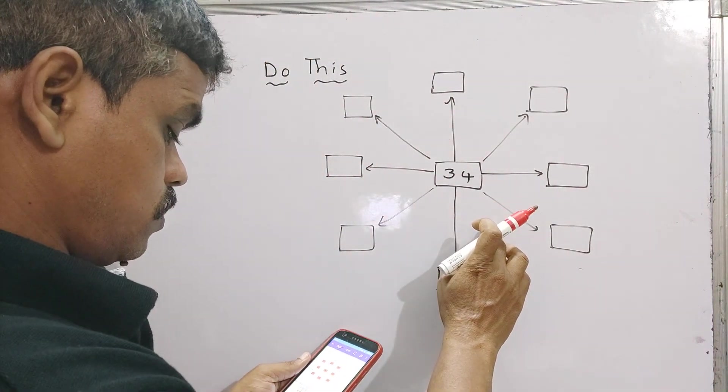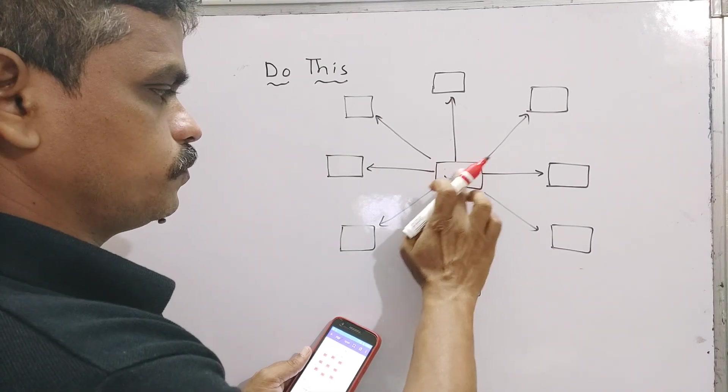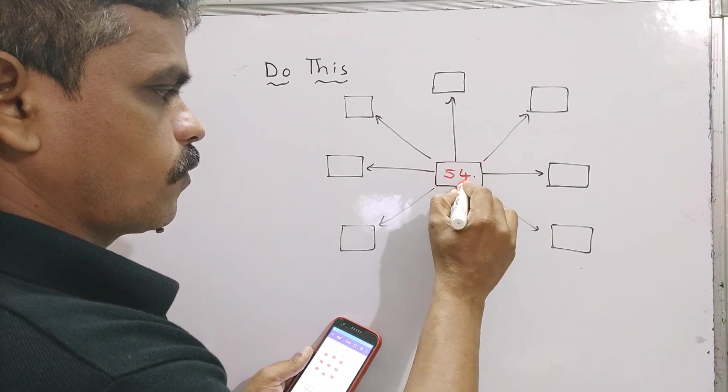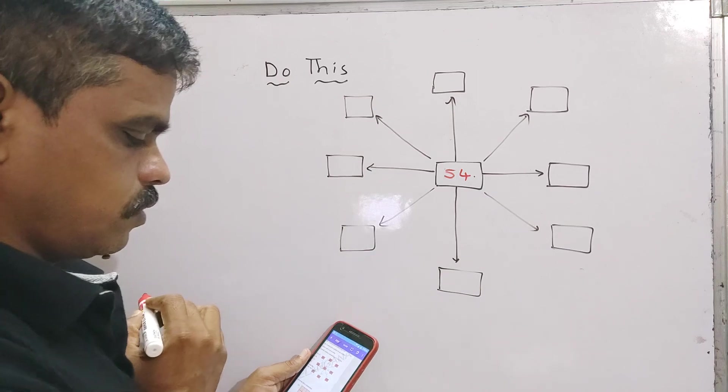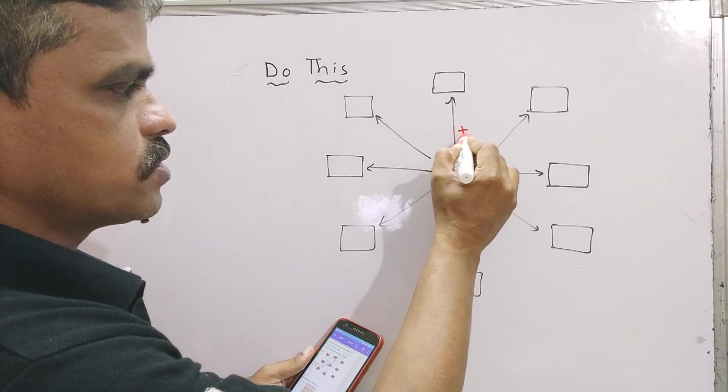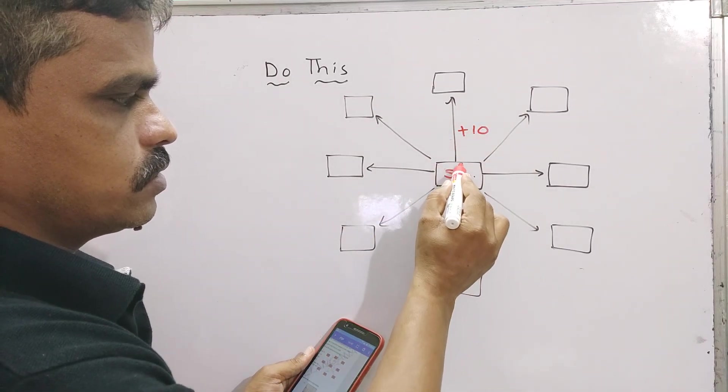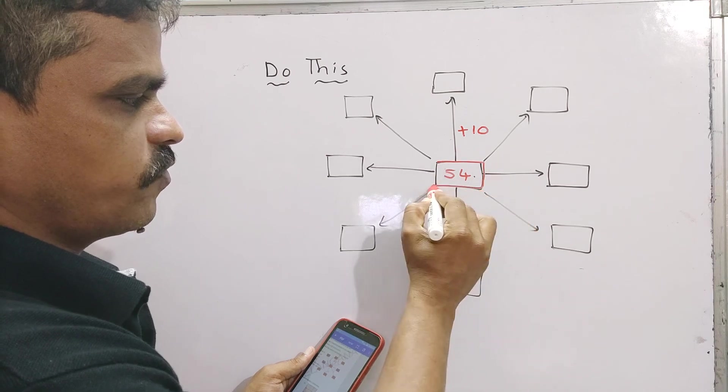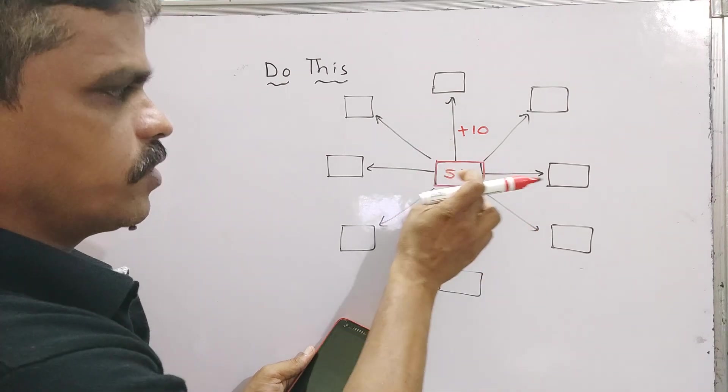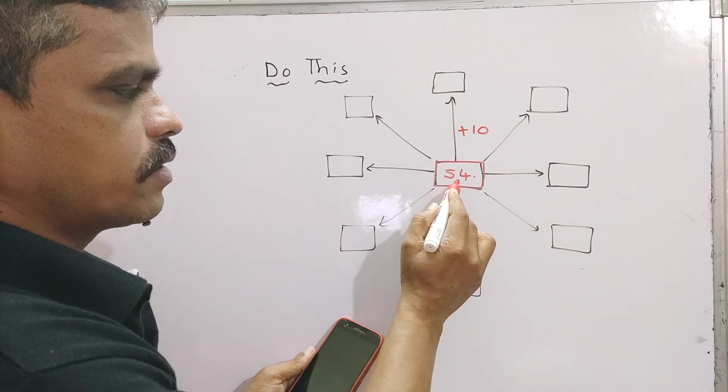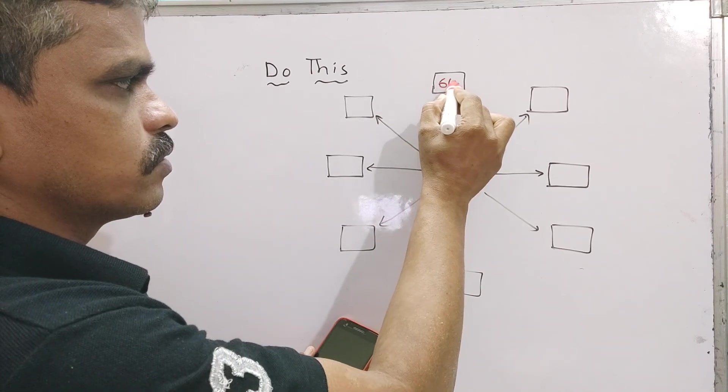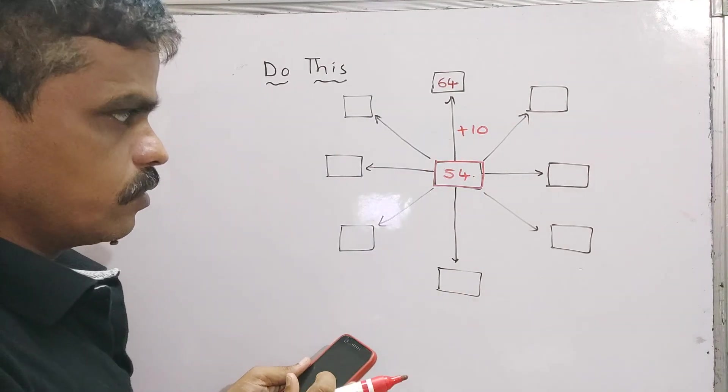In your page number four we have some boxes in red. Here it is, 54 is there in the center box. So remaining boxes are there. Here 54 plus 10, add 10 and you will get answer 64.